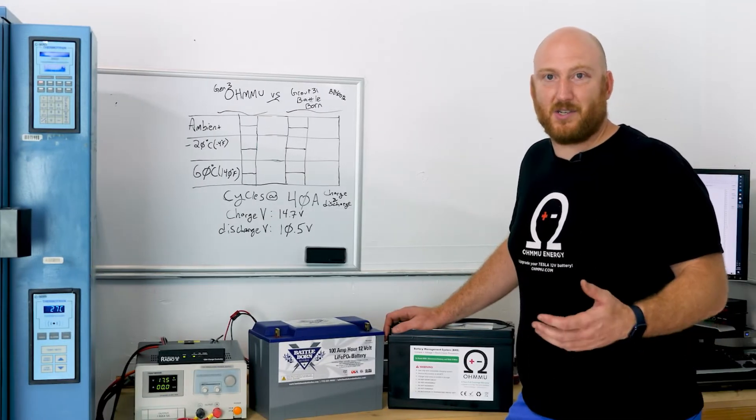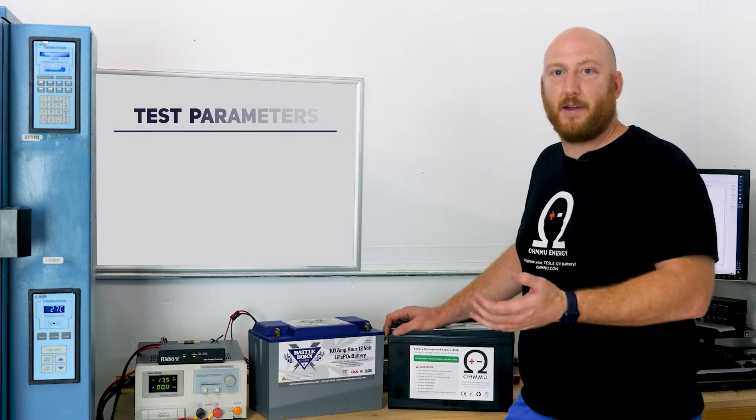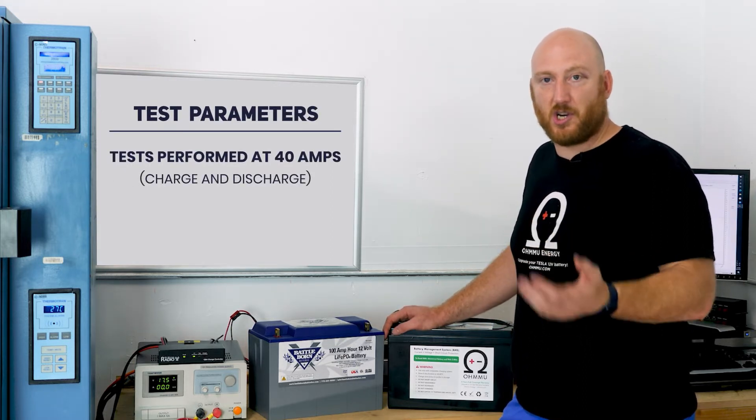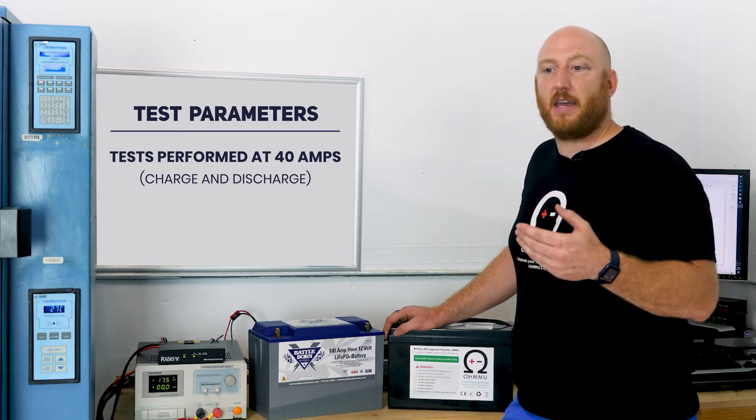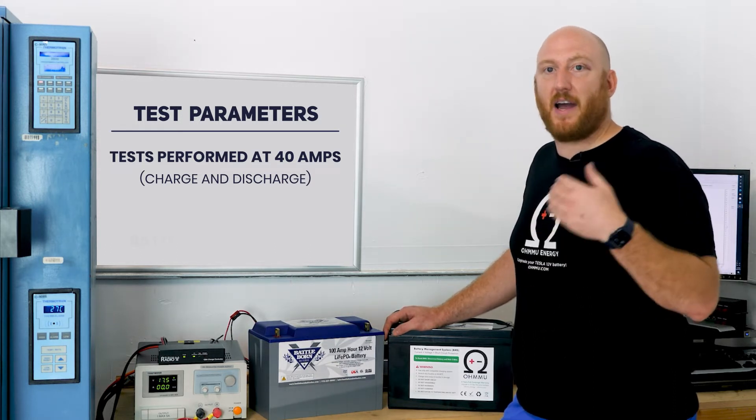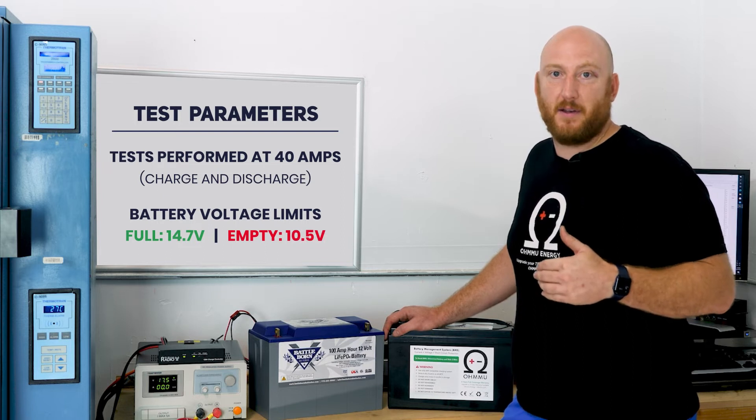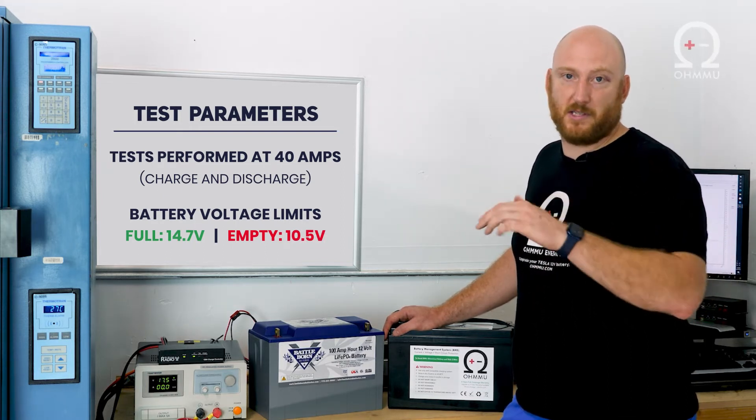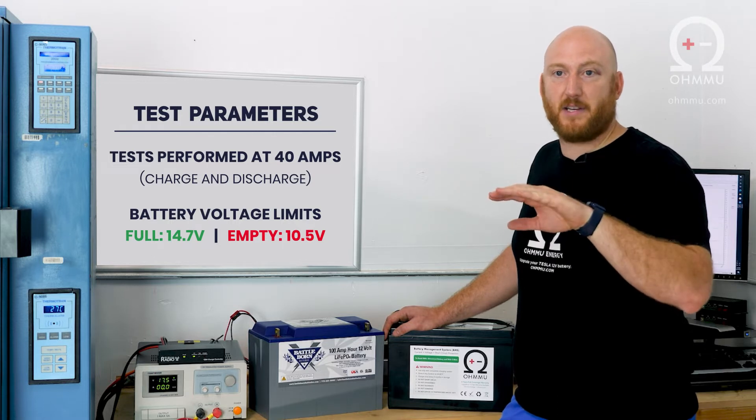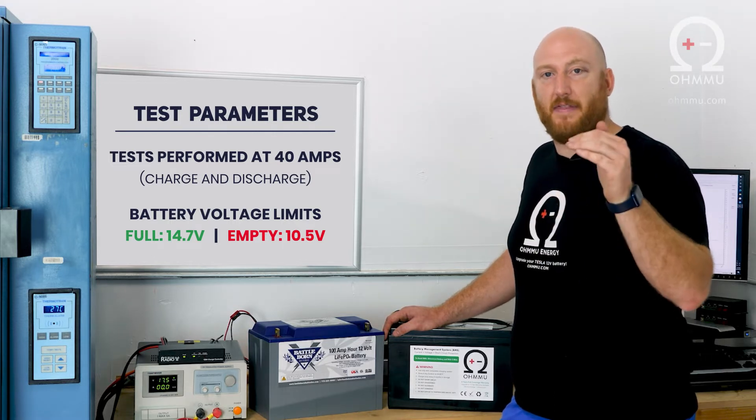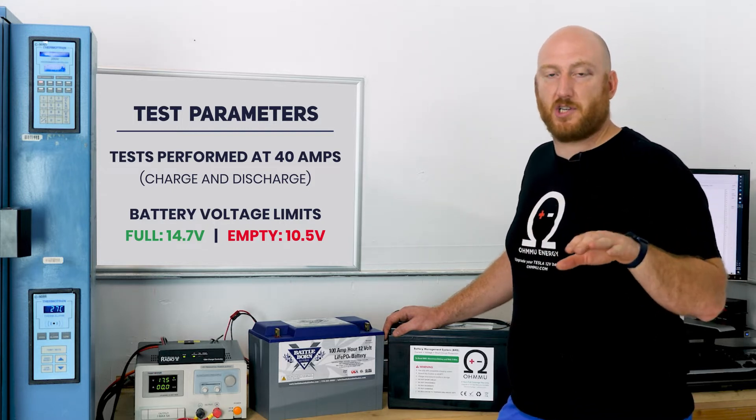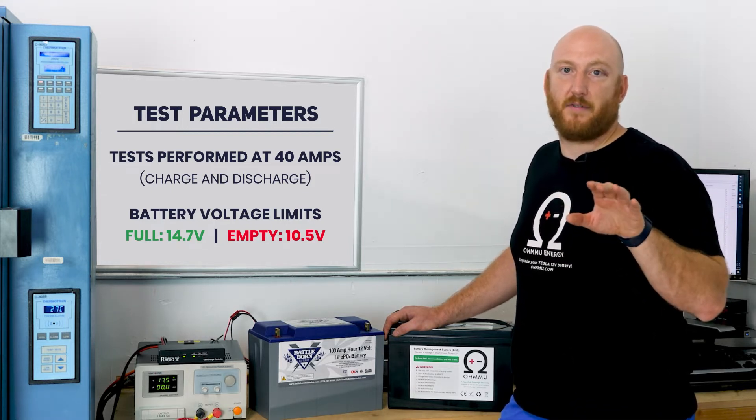During the test, we're going to run them the same on each battery. The test will be done at 40 amps, both charge and discharge. And then the limits that we're going to use to define what's full and what's empty are 14.7 at the top. Our system is going to cut off charging as soon as the battery touches 14.7. And then empty is going to be 10.5. We're going to cut off all discharging as soon as we hit 10.5 volts.